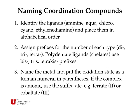Naming coordination compounds requires about six different rules. First, identify the ligands: neutral ligands like amine and aqua for ammonia and water, negatively charged ligands like chloro and cyano, and chelating ligands like ethylenediamine. Place them in alphabetical order, then assign prefixes for the number of each type of ligand — diamine, tri-aqua, tetrachloro, and so on. If you have polydentate or chelating ligands like ethylenediamine, instead of di and tri, you use bis, tris, tetrakis prefixes.